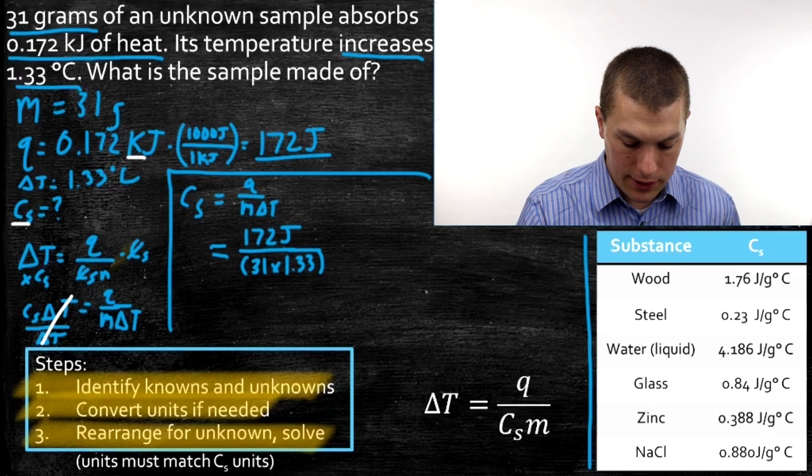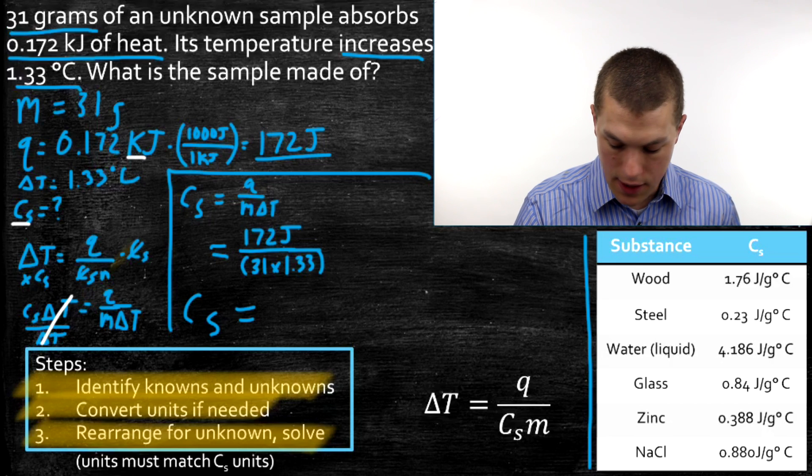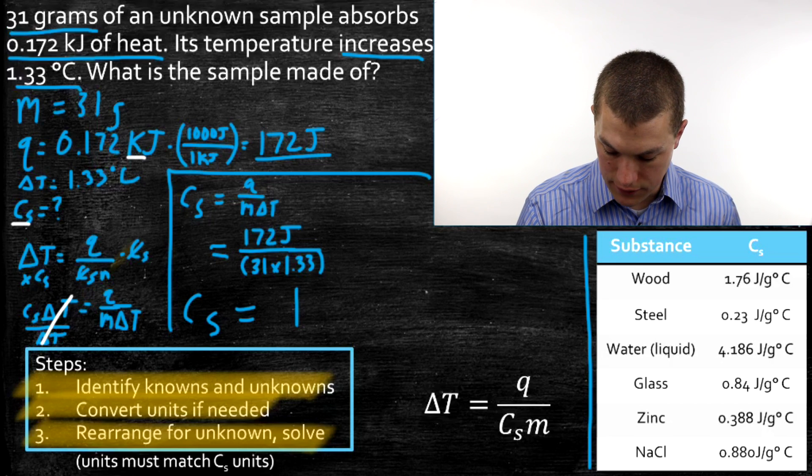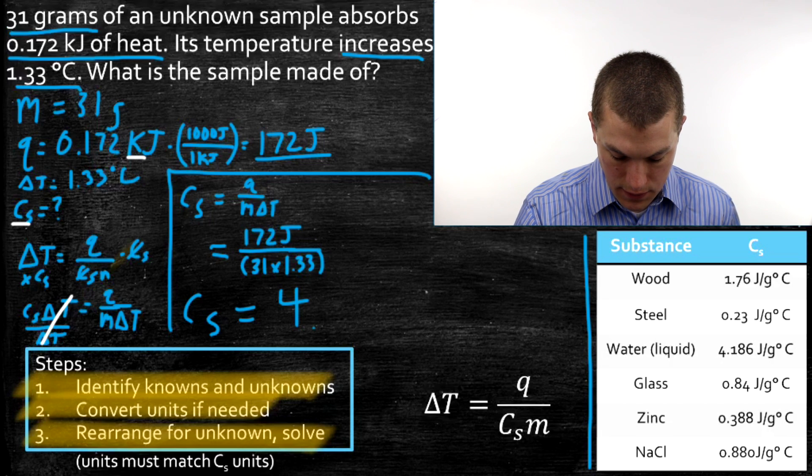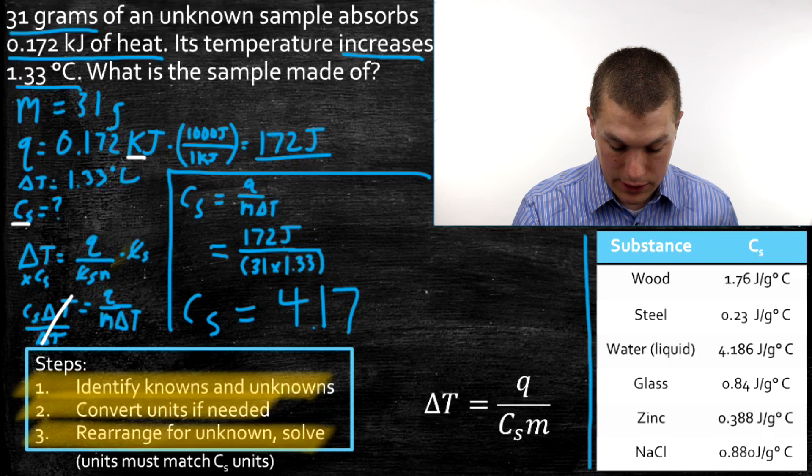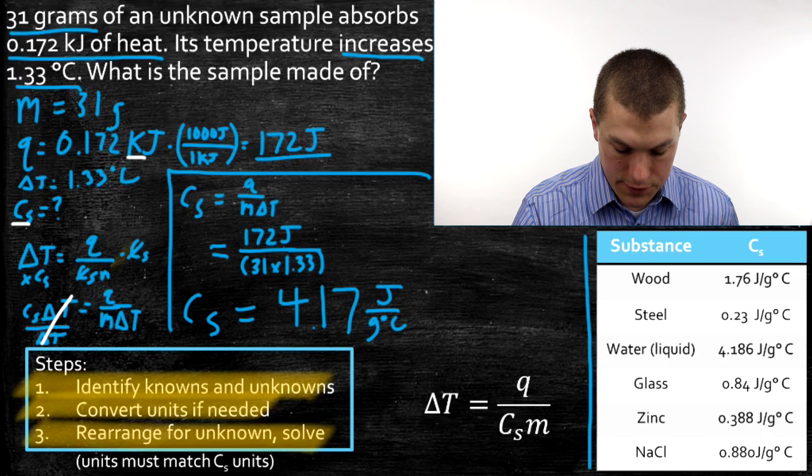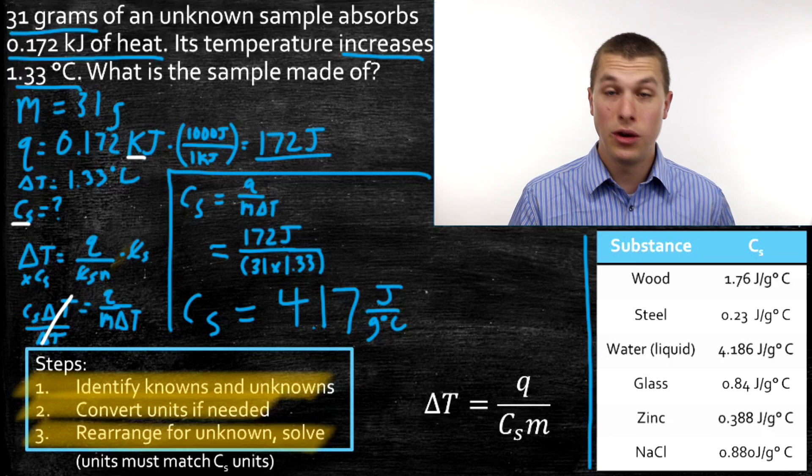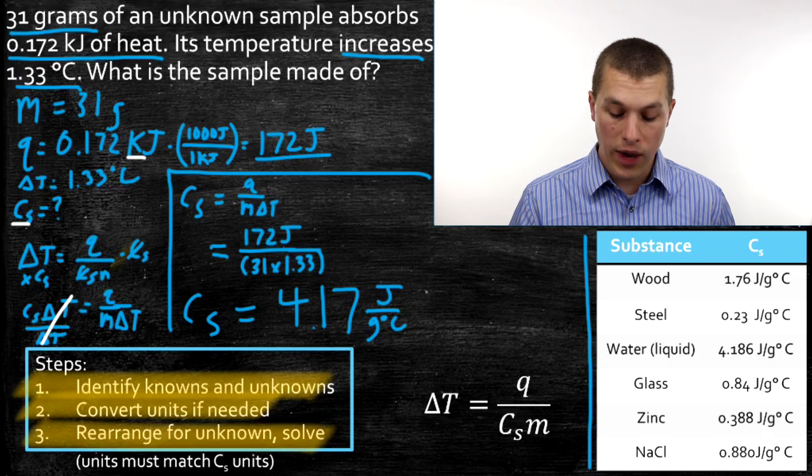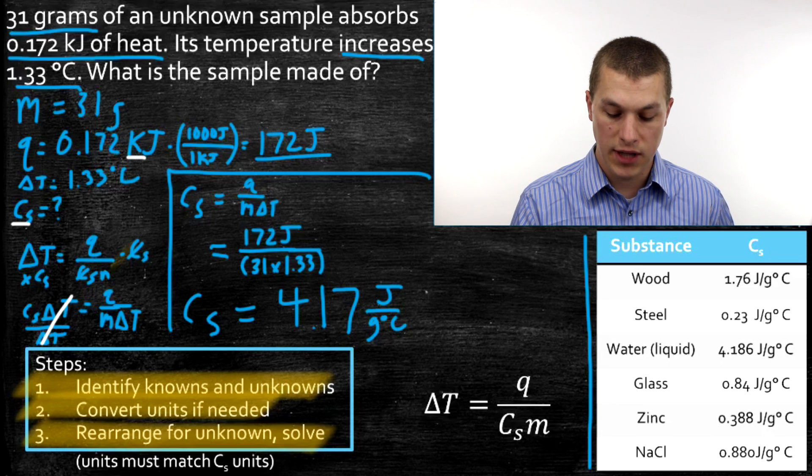So when we plug that into our calculator, we're going to get that our Cs is 4.17. And the units there come directly from the units in our equation. They're joules per gram degrees Celsius. Alright, so we know the heat capacity, but now we have another step.